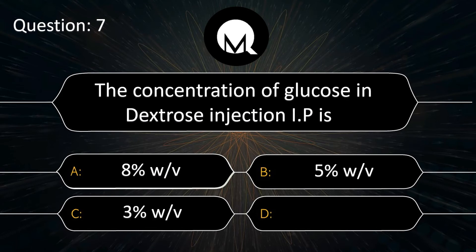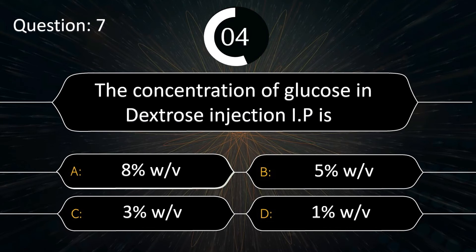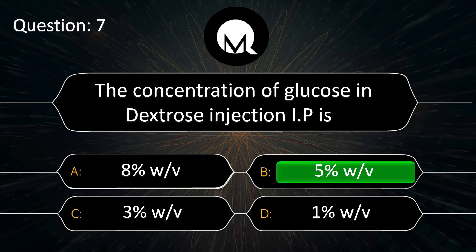The concentration of glucose in dextrose injection IP is: 8%, 5%, 3%, or 1%? Answer is 5%.